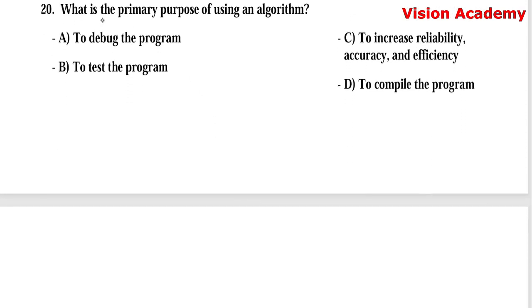Question number 20: What is the primary purpose of using an algorithm? Option A, to debug the program. Option B, to test the program. Option C, to increase reliability, accuracy, and efficiency.